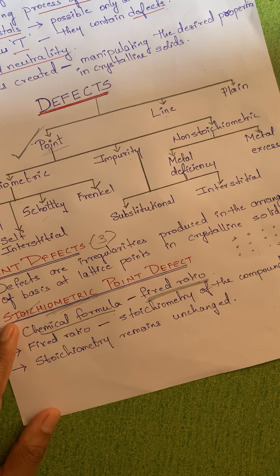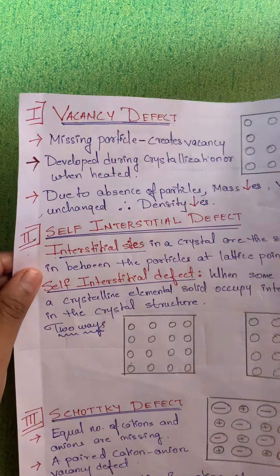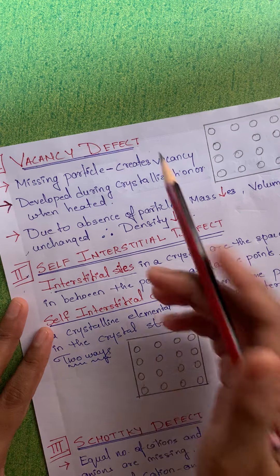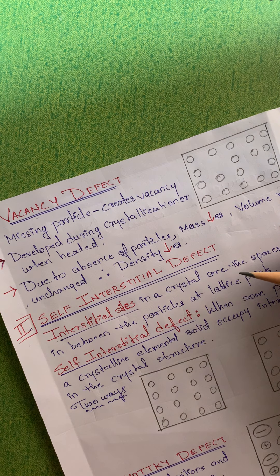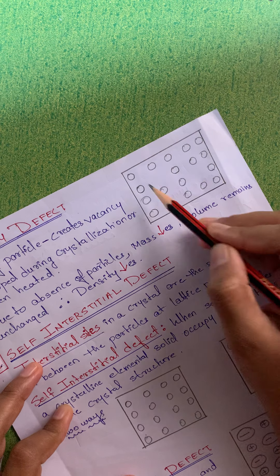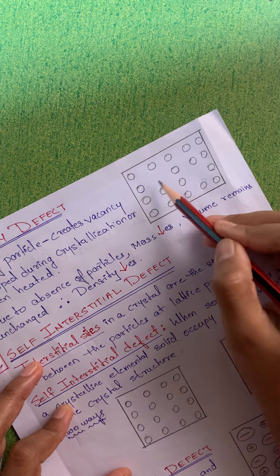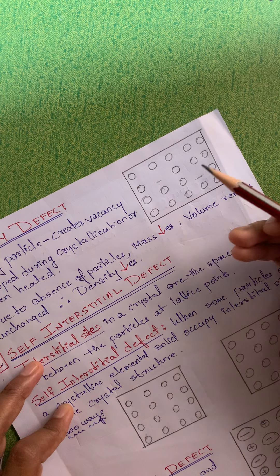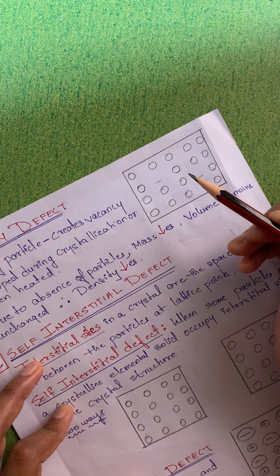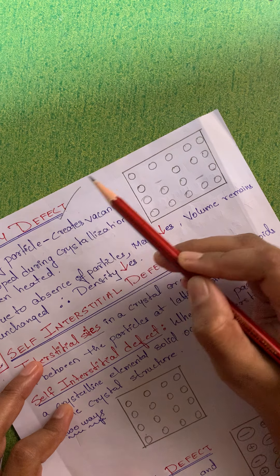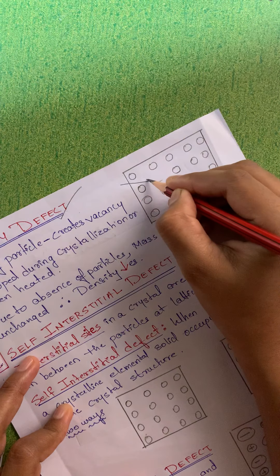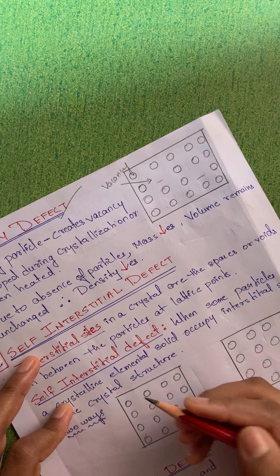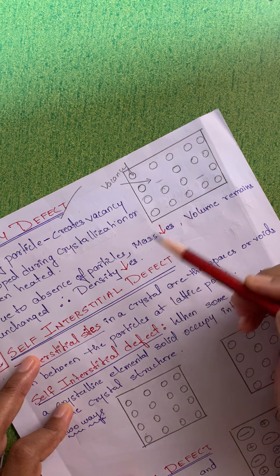What do we mean by stoichiometric point defect? We are talking about the ratio of the compound. Even after some particles are missing, the stoichiometry remains the same in the crystal. For example, in NaCl, if one Na is taken out, one Cl will also be taken out, so the chemical formula always remains the same. Stoichiometry — the fixed ratio — is maintained. The stoichiometry of the compound remains unchanged in the crystal structure.